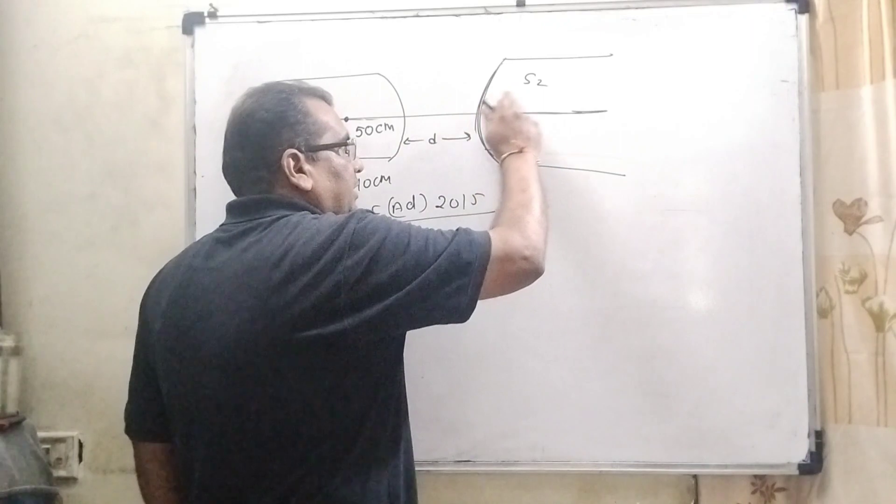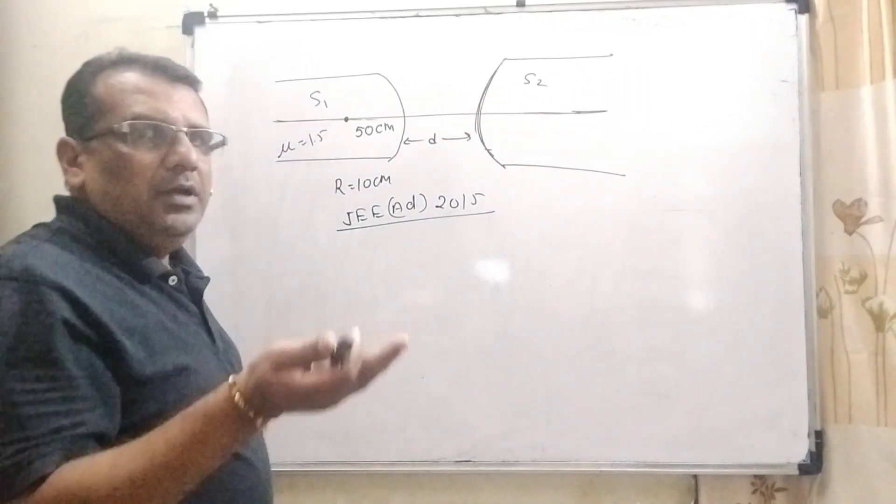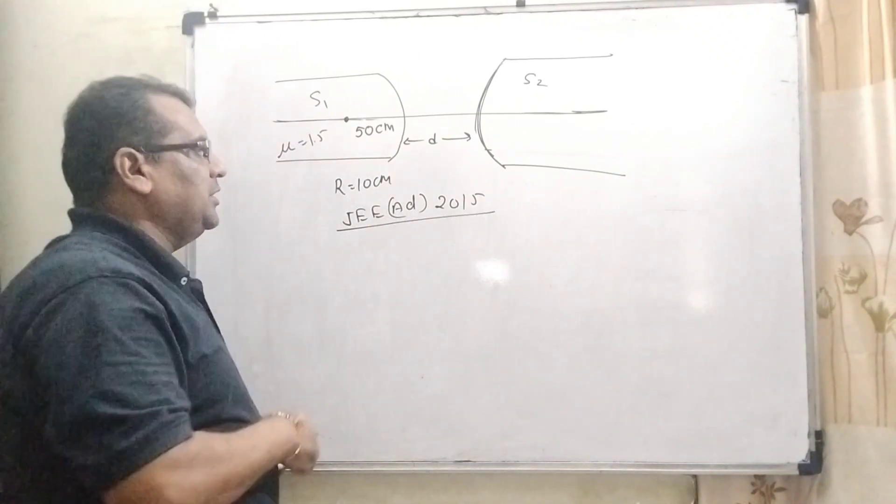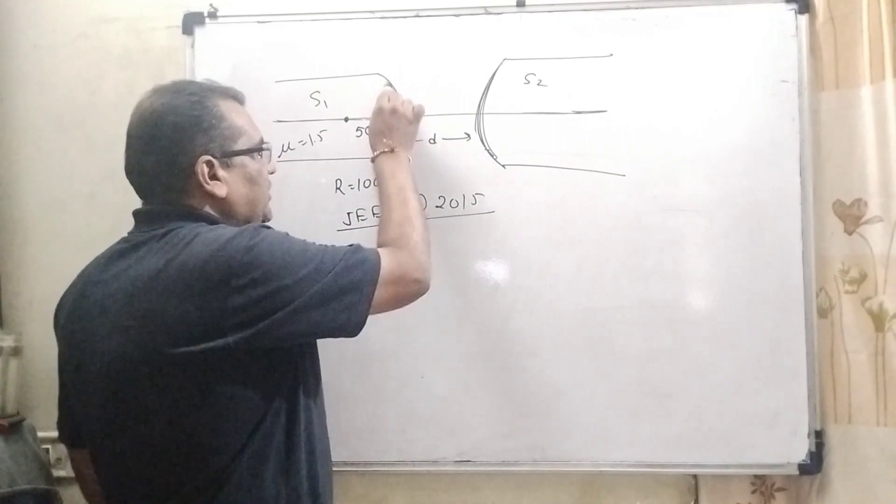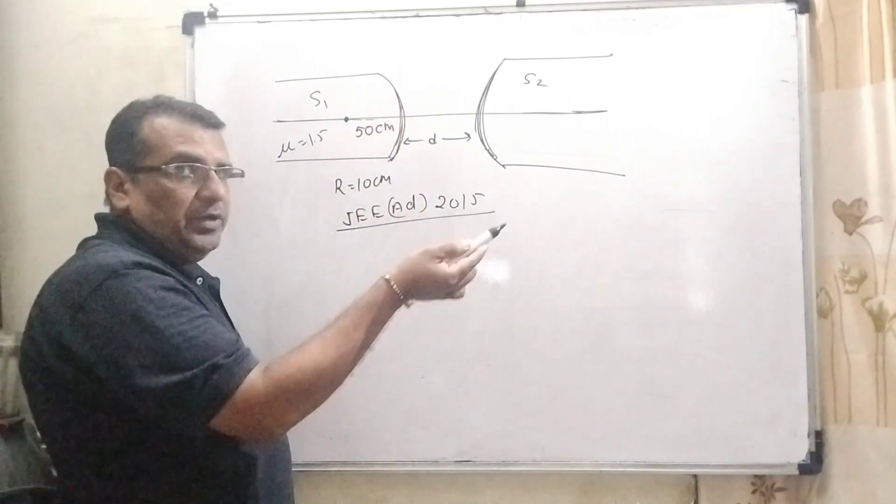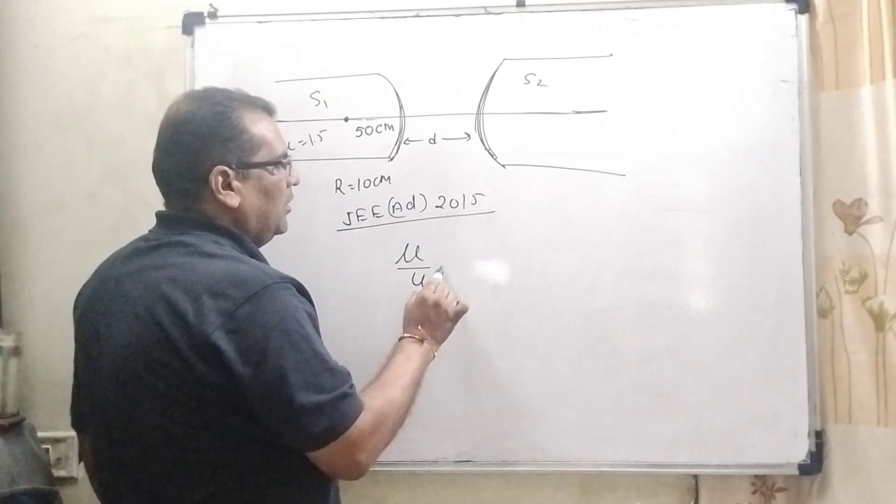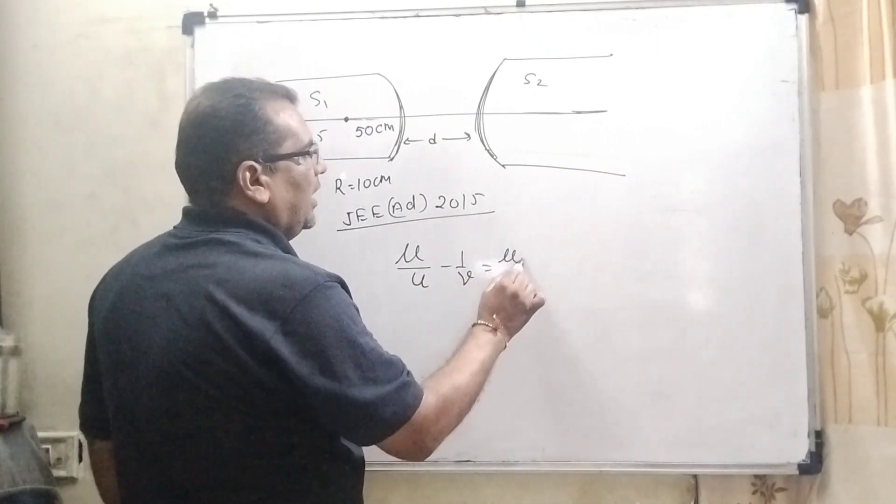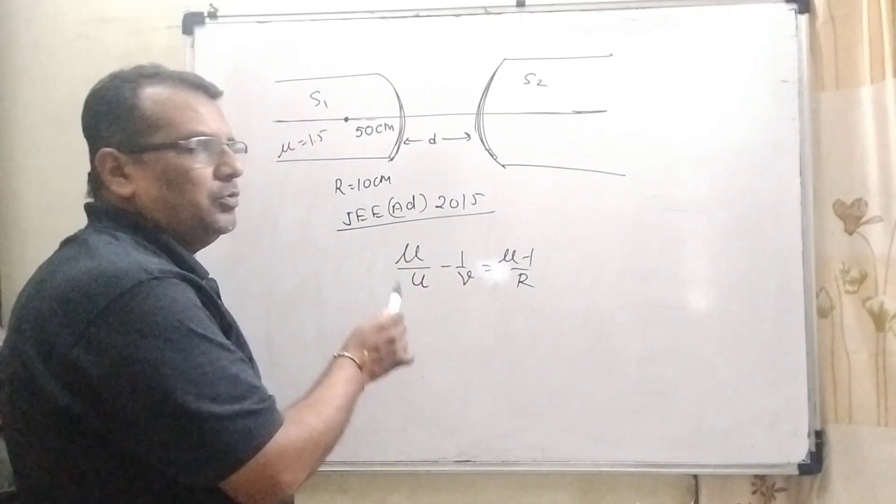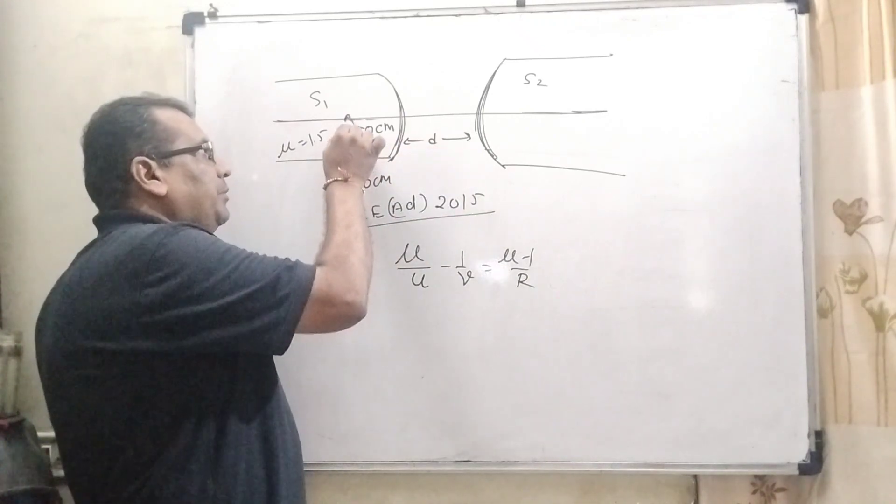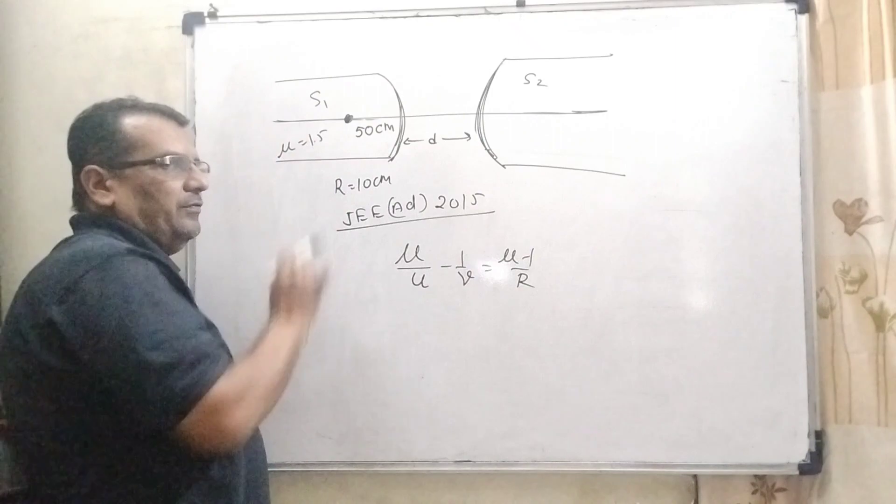Which formula we have been using? And then after it emerges, it works as an object for the second surface. And then it reaches to this surface and becomes parallel. It means V becomes infinity. Therefore we are using this formula for this surface - which surface? Concave surface, from denser to rarer.